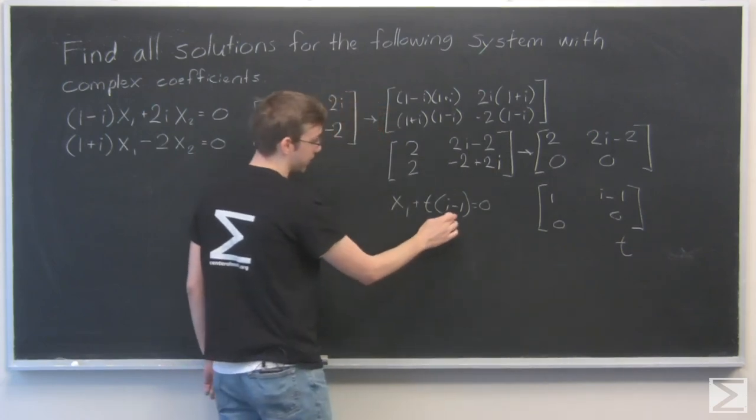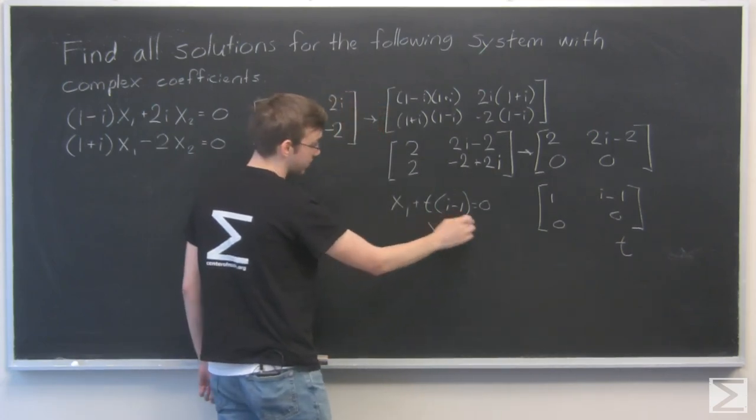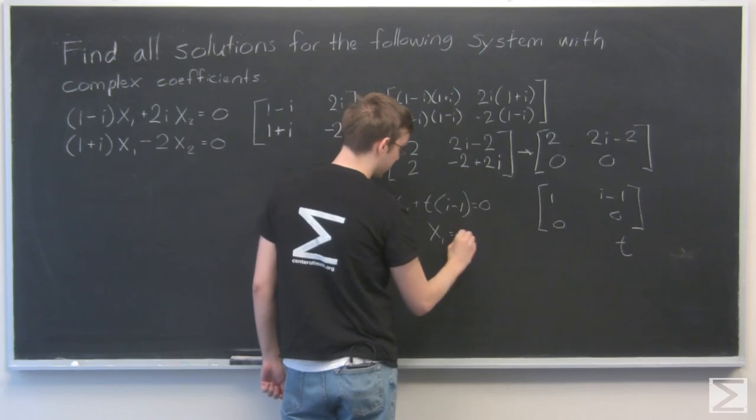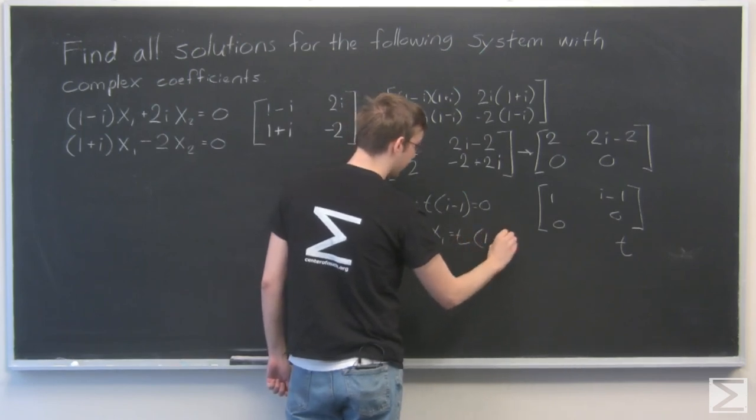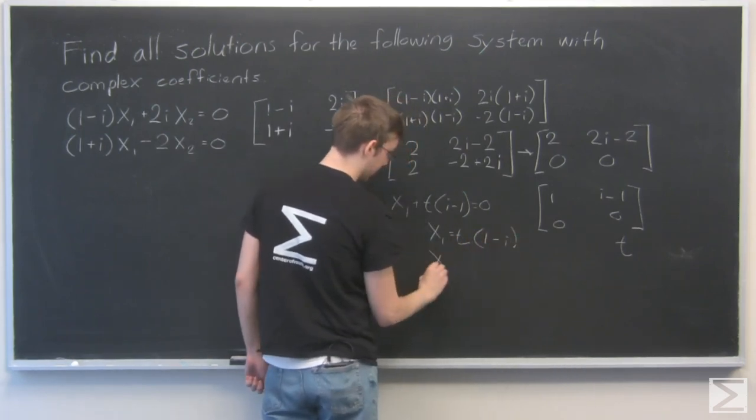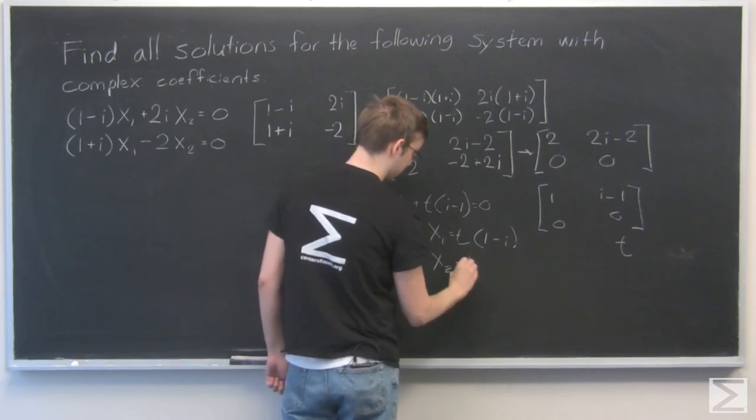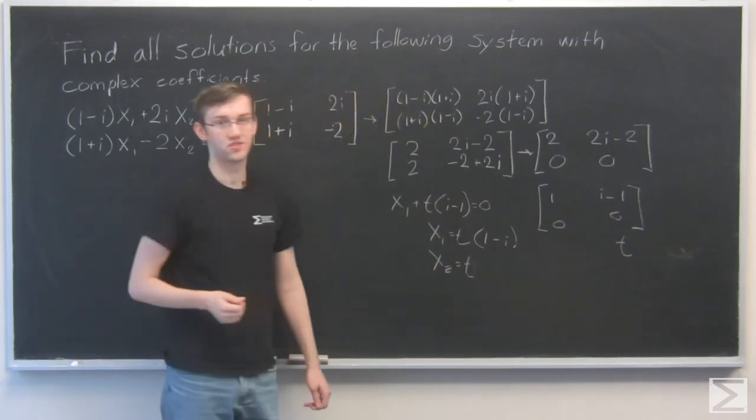So x1 equals, if we multiply this by negative 1, it becomes 1 minus i. So x1 equals t times 1 minus i. And x2 equals t. So that's our solution to the system.